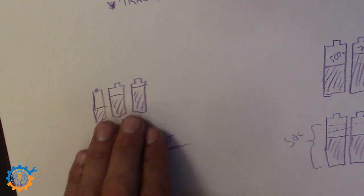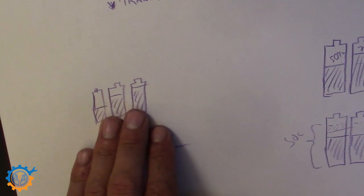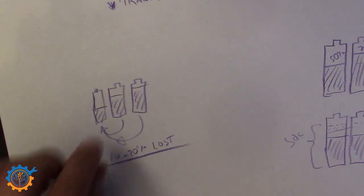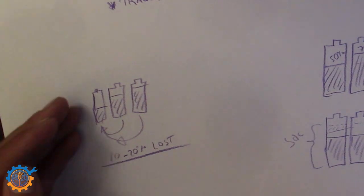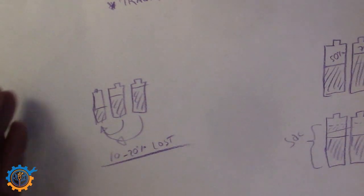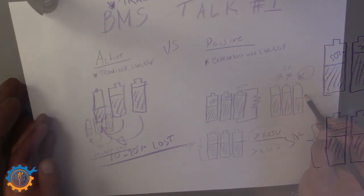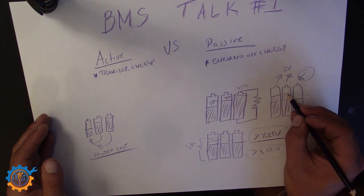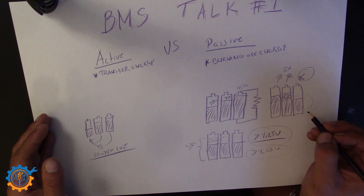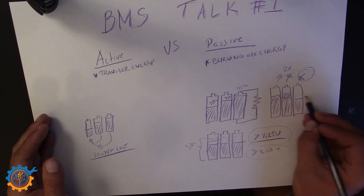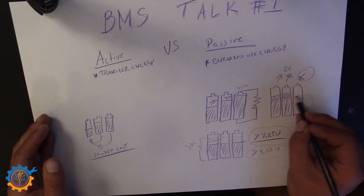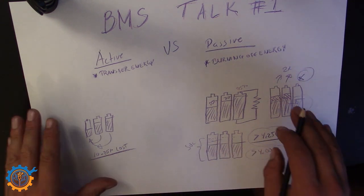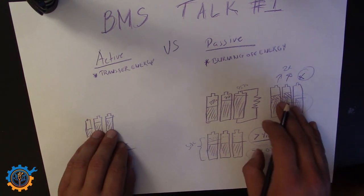Active balancing means you can potentially balance whenever you want. It can be used during top or bottom balancing, but if you do that you potentially don't save much energy. In the scenario of a self-discharging pack, you save energy because instead of burning off the capacity of two cells, you move a portion of that energy to the low cell — minus the capacity lost in transfer — so you actually save energy. This is where active balancing is better than passive balancing.